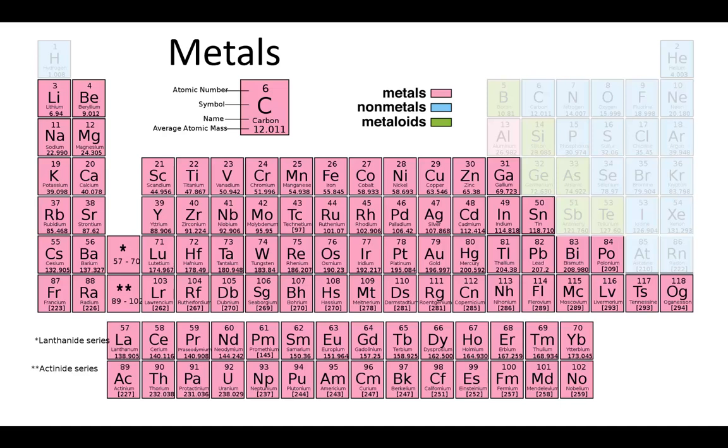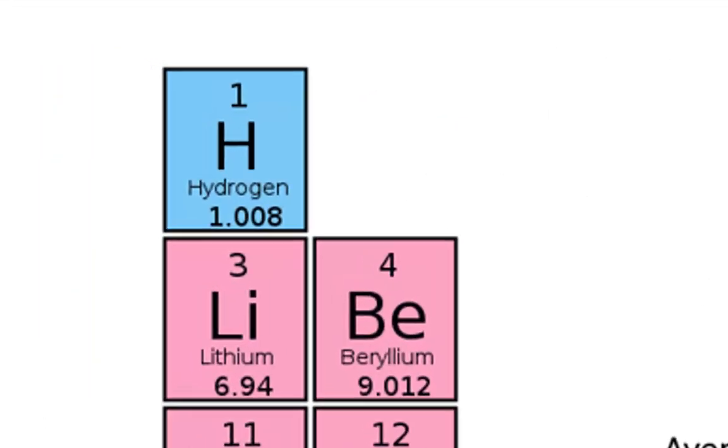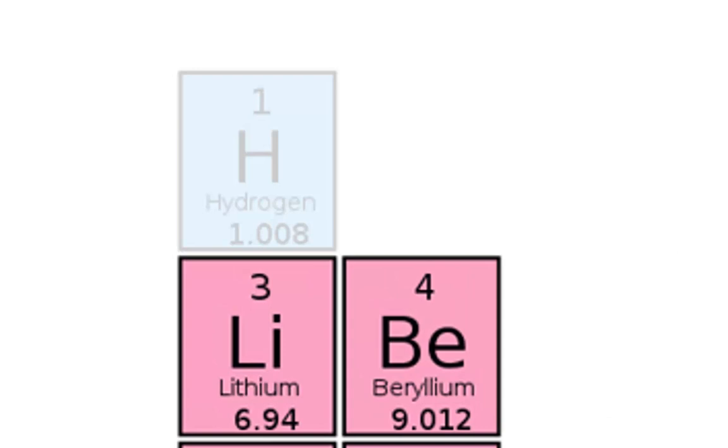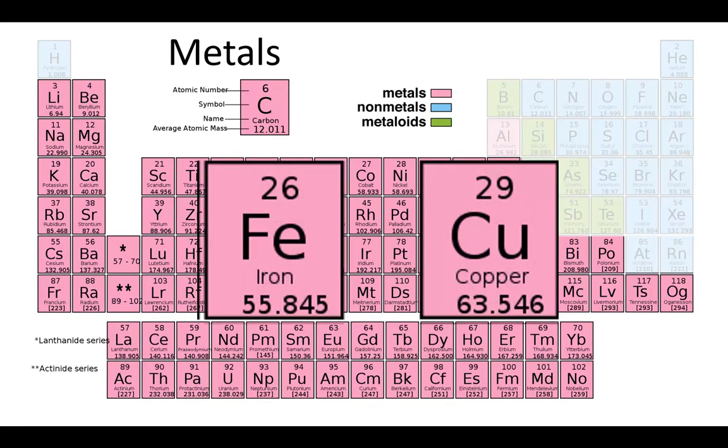There are far more metals than any other kind of element. You find the metals on the left-hand side of the periodic table. Hydrogen is not a metal, even though you do find it also on the left.